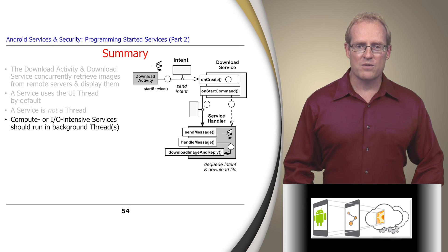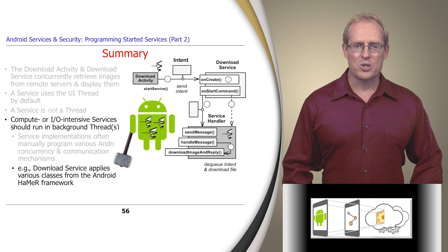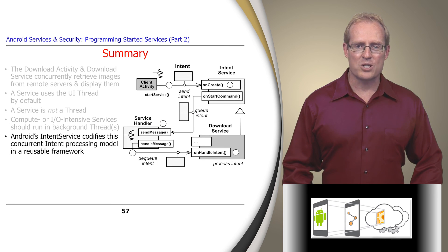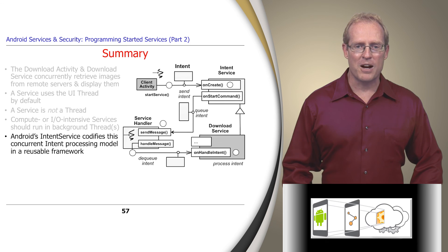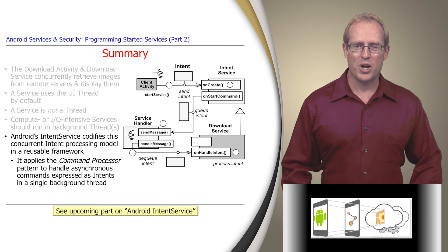Compute or IO-intensive services therefore often run in one or more background threads, so service implementations often focus on defining classes that leverage various Android service, concurrency, and communication mechanisms. For example, the download service used various classes from the Android Handler framework to process intents in a handler thread and retrieve images concurrently. Since writing these classes for each service is tedious and error-prone, Android provides the IntentService, which codifies concurrent intent processing in a reusable framework that applies the command processor pattern to handle asynchronous commands expressed as intents in a single background thread, as shown in the next video.